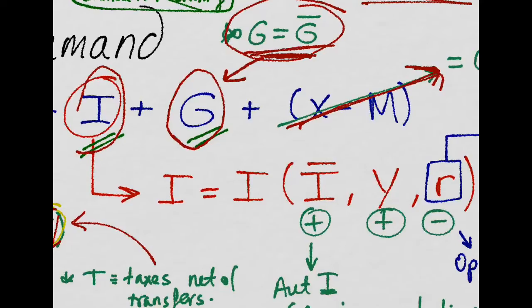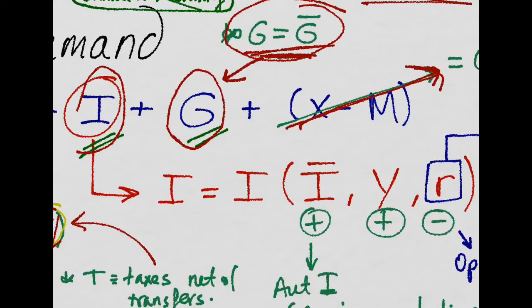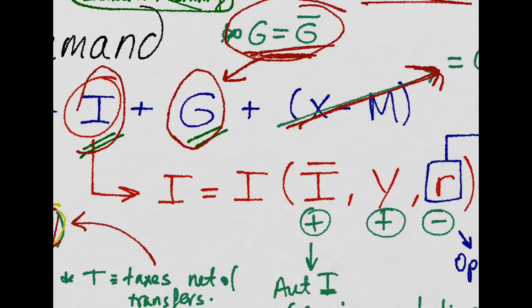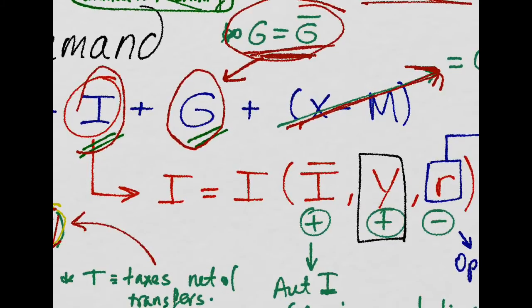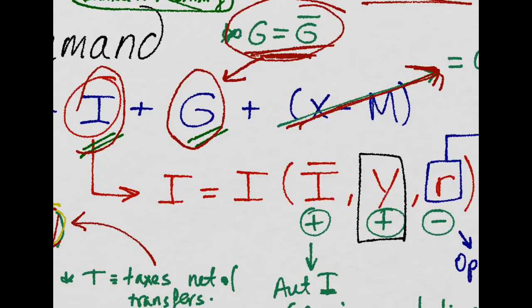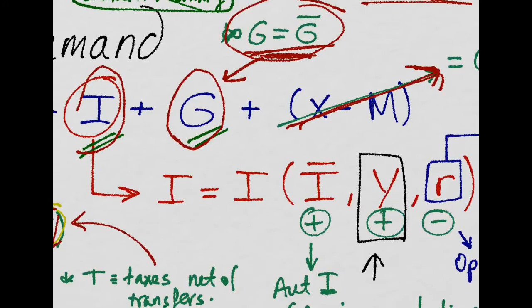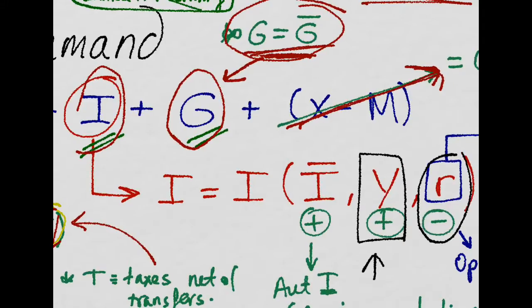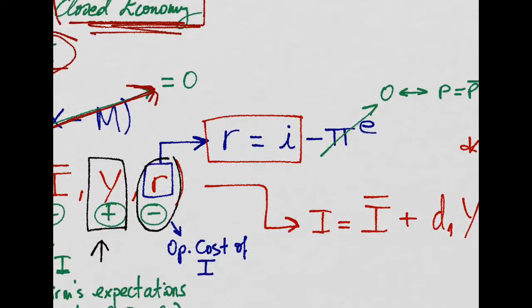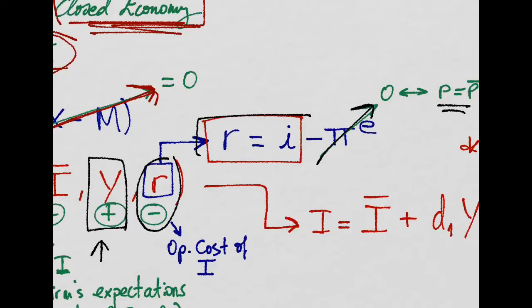Investment by firms will depend positively on the income in the economy, because firms will want to invest more when things go well, and it depends negatively on the rate of return of bonds. Remember that since we are in the short run and prices don't change, there is no inflation, so our real interest rate is equal to the nominal interest rate of bonds.